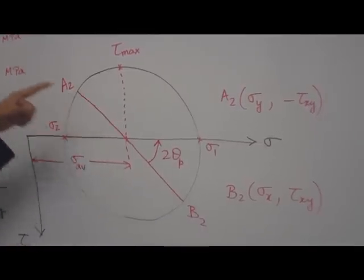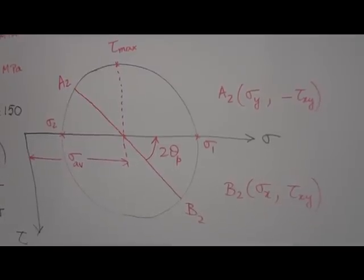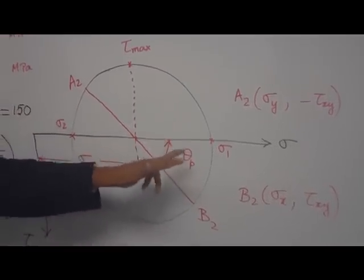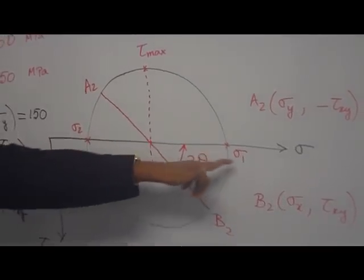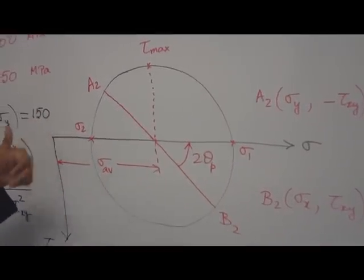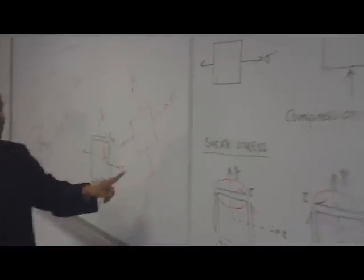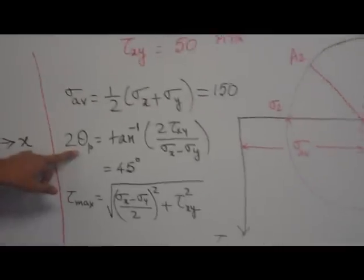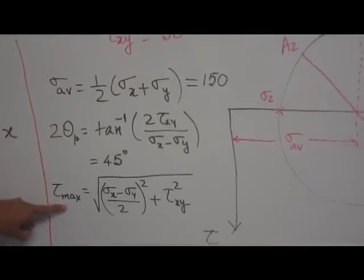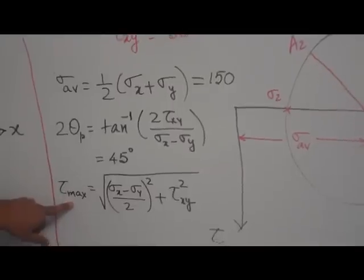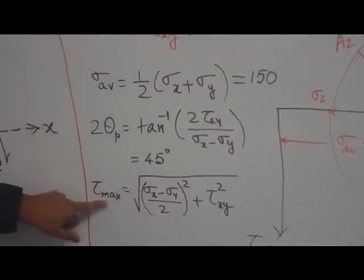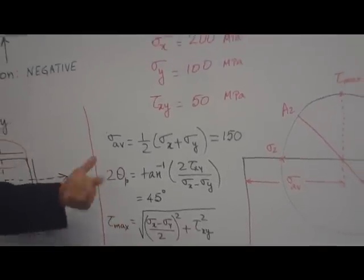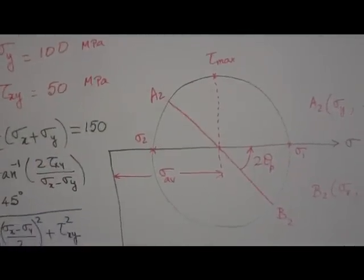What the diameter represents is the current position of the element. If you rotate the element through an angle 2 theta p, then you will have the principal direction — just sigma 1 and sigma 2, no shear stress, as we saw in the diagram. You can calculate 2 theta p using the corresponding relation, and tau max is given by that relation as well. Tau max is nothing but the radius of the circle. If you add the average plus the radius, you get sigma 1, the maximum principal stress. If you subtract the radius from sigma average, you get the minimum principal stress. That completes the presentation.